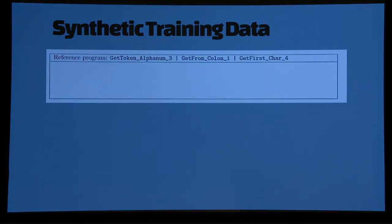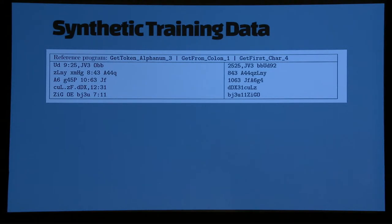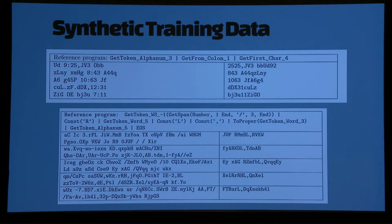To give a concrete example, in the Flash Fill domain, we start with a programming language, and now we want to generate our training data. Here's a random program we sample, which says get the third alphanumeric string, followed by a string starting from first colon, followed by first four characters. Then we generate a random input, some string, we run the program to get output. We generate five random inputs, run the program, get five corresponding outputs, and this becomes our training task. So we have a program and five input-output pairs. Similarly, we can sample even more complex programs. Here's a 10 length program, some random input, we generate output. This would be essentially our training data.